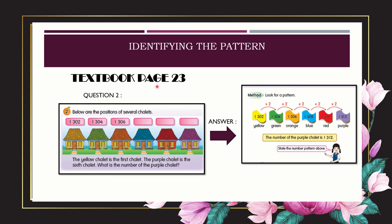Next, page 23, question number 2. Below are the positions of circular shellies. Remember the steps: understand and interpret the problem, plan a solving strategy. For these types of questions, the strategy is identifying the pattern. We read the sentence: the yellow shelly is the first shelly, number 1302. The purple shelly is the sixth shelly. The question: what is the number of the purple shelly?